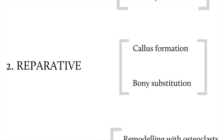The reparative phase: cellular tissue grows out from the ends of the fracture, and the osteoblasts lay down a woven matrix of collagen and polysaccharides, which become calcified. This immature bone is called callus. It is visible on X-rays and indicates the fracture is healing. Callus is gradually replaced with lamellar bone, and the healing consolidates and the bone strengthens. This is known as bony substitution.